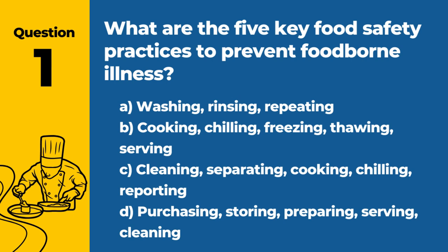Question 1. What are the 5 key food safety practices to prevent foodborne illness? The answer is C: Cleaning, Separating, Cooking, Chilling, and Reporting. These practices are essential in preventing foodborne illness by minimizing the risk of contamination and controlling the growth of pathogens.